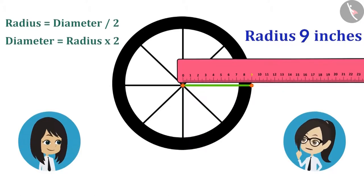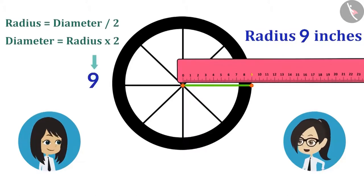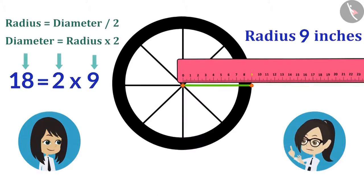That means if we multiply the radius by 2, then the measure of diameter will be known. Yes. Radius is 9 inches and multiplied by 2, it will be 18 inches. This means that the diameter of the wheel of our bicycle is 18 inches.